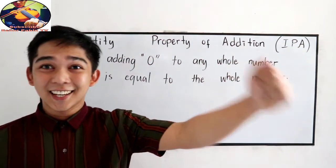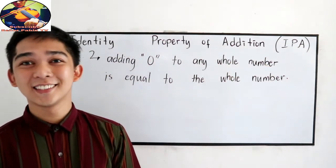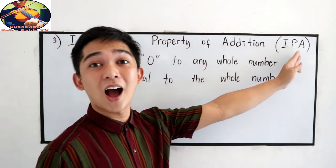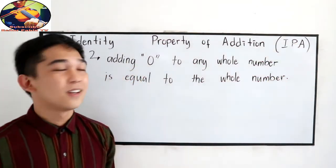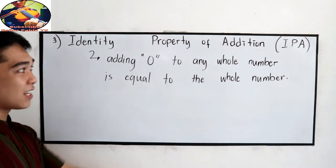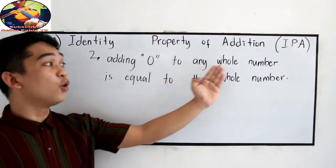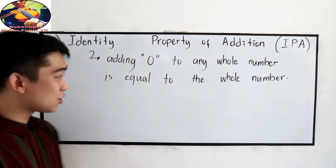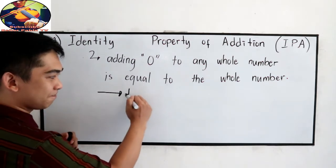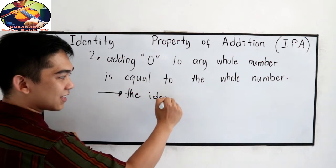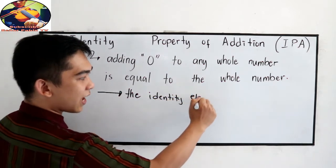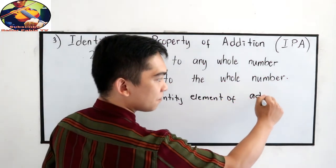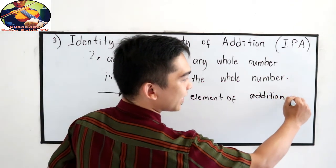And now, finally, our last property: the Identity Property of Addition, also known as the IPA. The Identity Property of Addition indicates that adding zero to any whole number is equal to the whole number. That means the identity element of addition is zero.